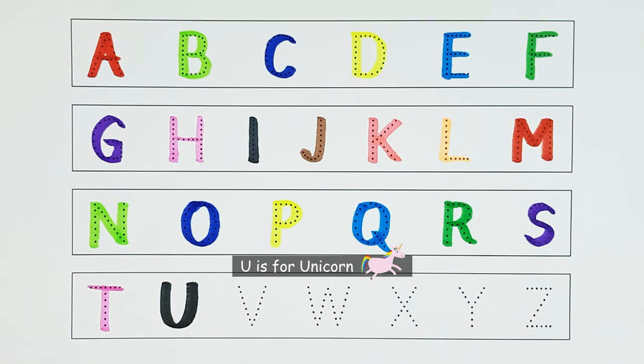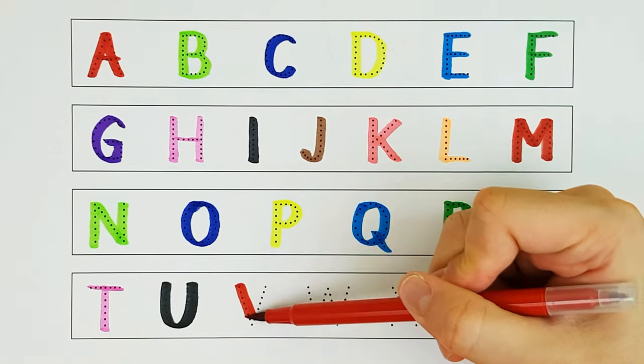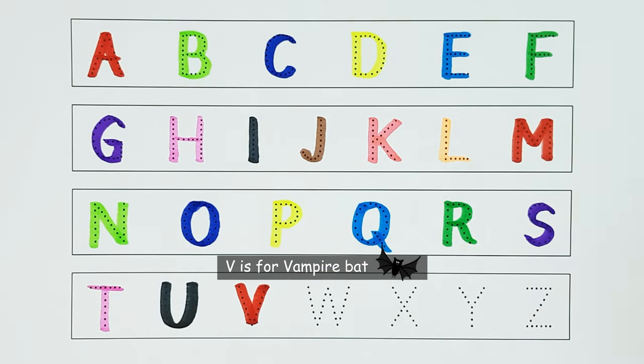U. U is for Unicorn. U. V. V is for Vampire Bat. V.